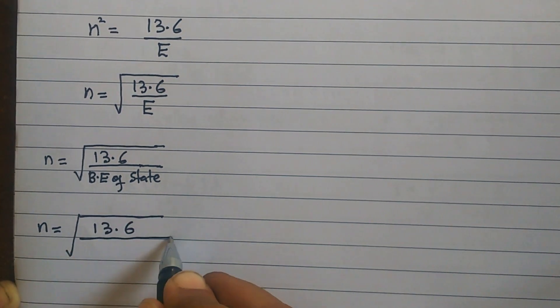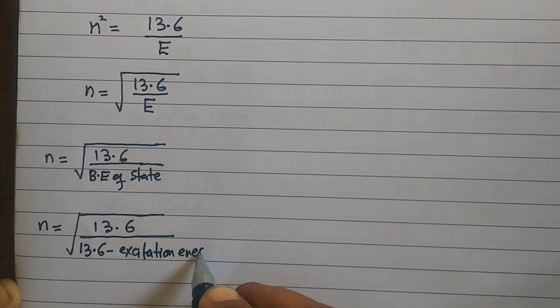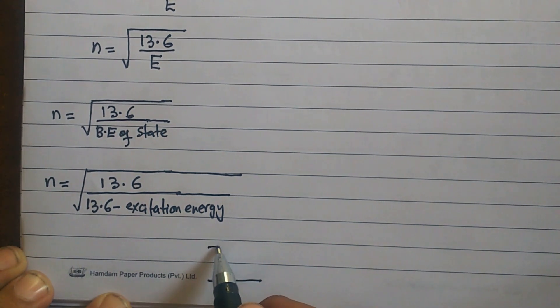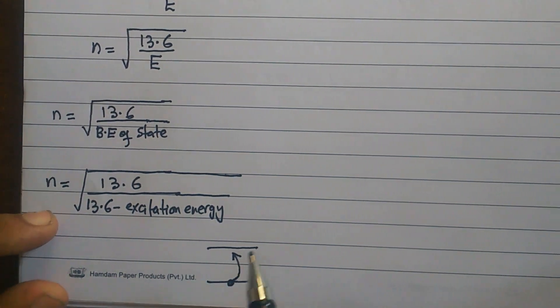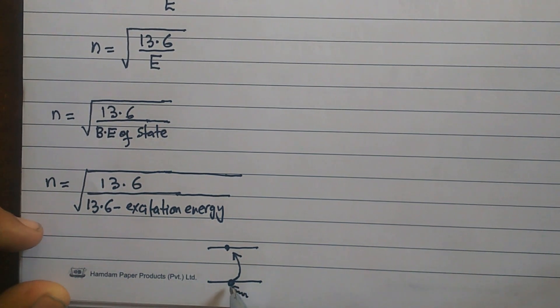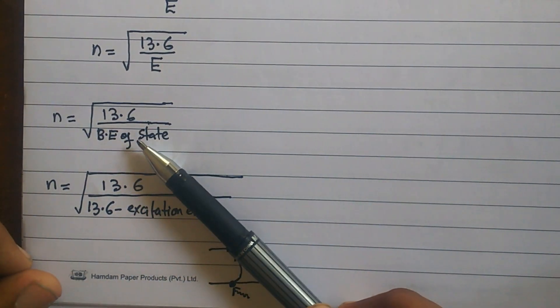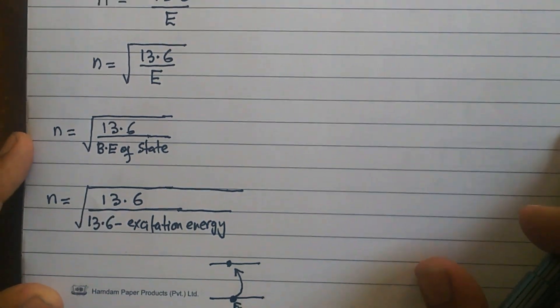If excitation energy is given, this formula transforms: n = √(13.6 / (13.6 − E_excitation)). You must remember: if binding energy of a state is directly given, put it straight into the formula. But if excitation energy is given, you must subtract it from 13.6 before finding the quantum number.